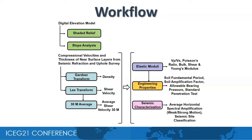This is the workflow for computation of geotechnical parameters. The digital elevation model is used for slope analysis and generation of a shaded relief map. The seismic refraction and uphole logging data processing provides the thickness and compressional velocities of near surface layers. These compressional velocities are used to compute density and shear wave velocity distribution in the study area. Subsequently, the average shear wave velocity of the top 30 meters of soil is computed, which is required in computation of various engineering parameters.